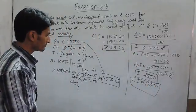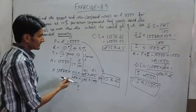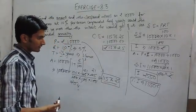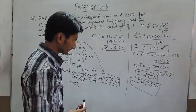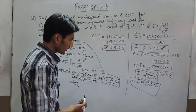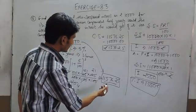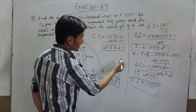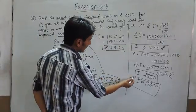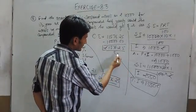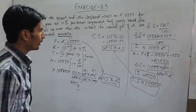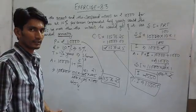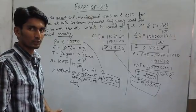And if the interest is payable half yearly, the interest will be 1576.25. So clearly the interest is more when the compound interest is payable half yearly. Thank you.